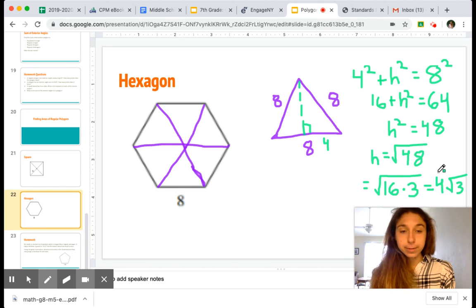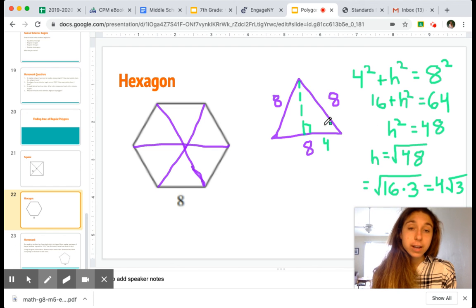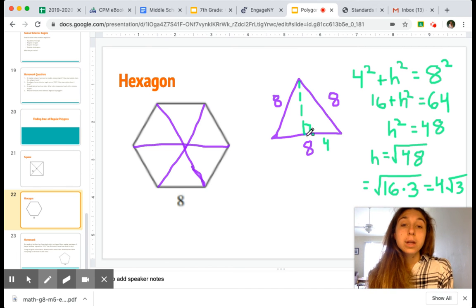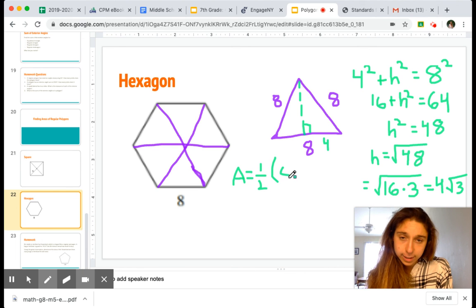All right. But we're not done yet. We're like halfway. So we found the height. Now we have what we need to find the area. We know that the area of one of our equilateral triangles is going to be one-half our base, which was 8, and then that height that we just found to be 4 root 3.